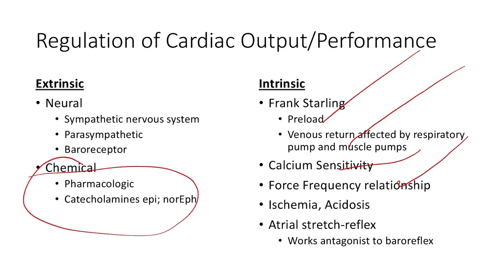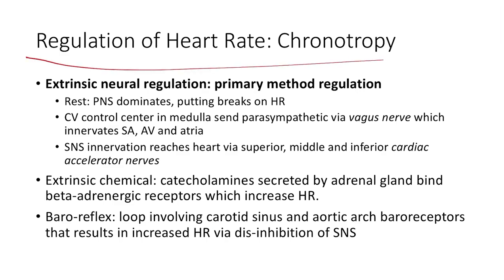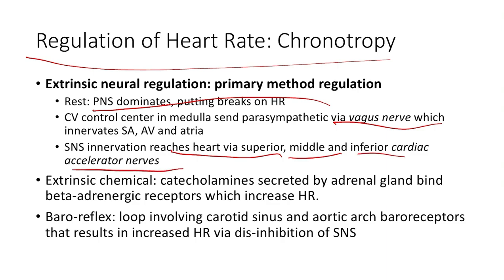We also need to think about heart rate, or chronotropy. At rest, there is both sympathetic and parasympathetic regulation of heart rate, but it's primarily the parasympathetic nervous system that pumps the brakes on heart rate. That's accomplished through the vagus nerve, which innervates the SA node, AV node, and atria. The sympathetic nervous system reaches the heart through the superior, middle, and inferior cardiac accelerator nerves. Sympathetic increases heart rate and contractility; parasympathetic does the opposite. There are also extrinsic chemical factors that can increase heart rate.